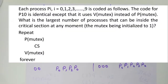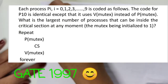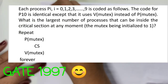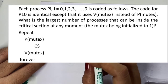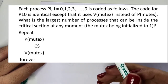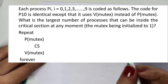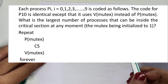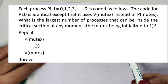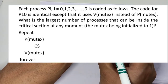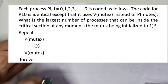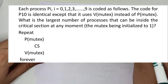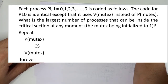Let's move to the next question. This is also a GATE-level question — I don't remember the exact year. Each process Pi, where i is 0 to 9 (10 processes), is coded as: P(mutex), then critical section, then V(mutex), repeated. The mutex semaphore is initialized to 1.